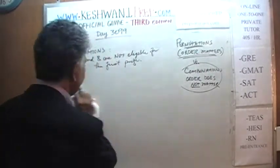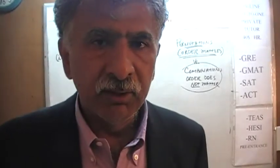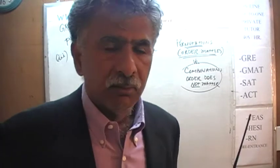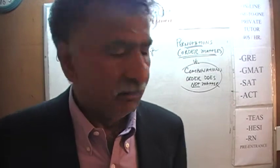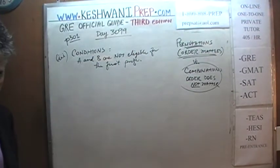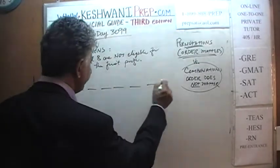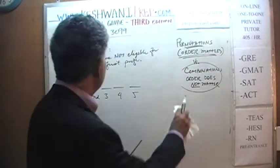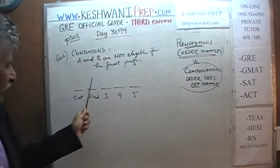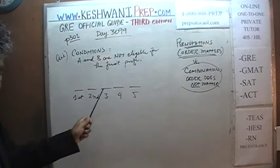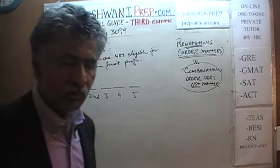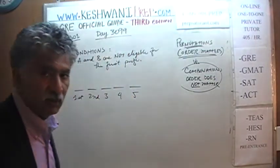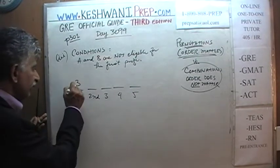Maybe it is a meeting of students and faculty, and the head of the table must be occupied by a professor — A and B are students not allowed to sit there. So what can we do? Here is the first seat, second, third, fourth, and fifth. Since neither A nor B are eligible for the first prize, how many ways can we give the first prize? Even with five people, the first prize has to go to either C, D, or E — there are only three different possibilities.